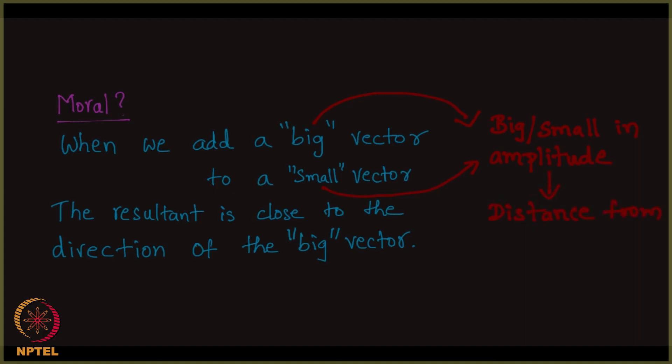So big and small by big and small I mean in the amplitude as I told you people. This is the distance from the origin. I am just revising whatever I said. So the moral is very clear to you people. When you add a big vector to a small vector, you get a vector close to the big vector both in direction as well as amplitude. Big plus small is equal to something close to big both in direction as well as amplitude.